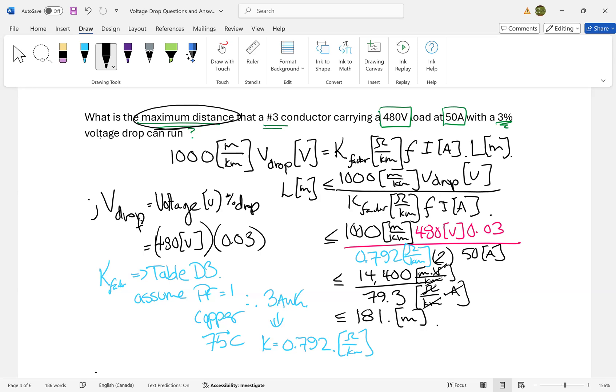181 meters is the maximum length that this #3 conductor carrying 480 volts at 50 amps with a 3% voltage drop can run. Hopefully that's helpful. If it is, please like, let me know what you liked or didn't like, and follow for more example problems as you study the Canadian Electrical Code. Thank you!